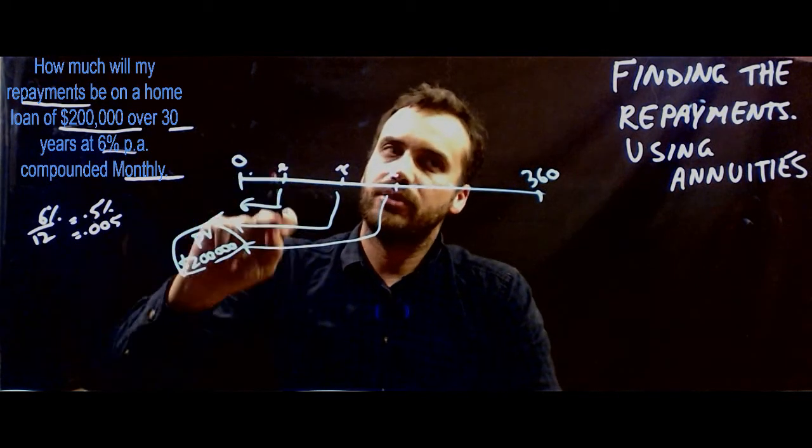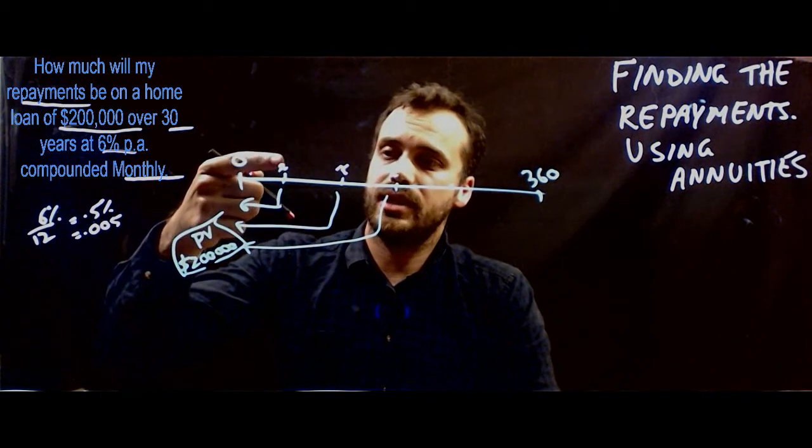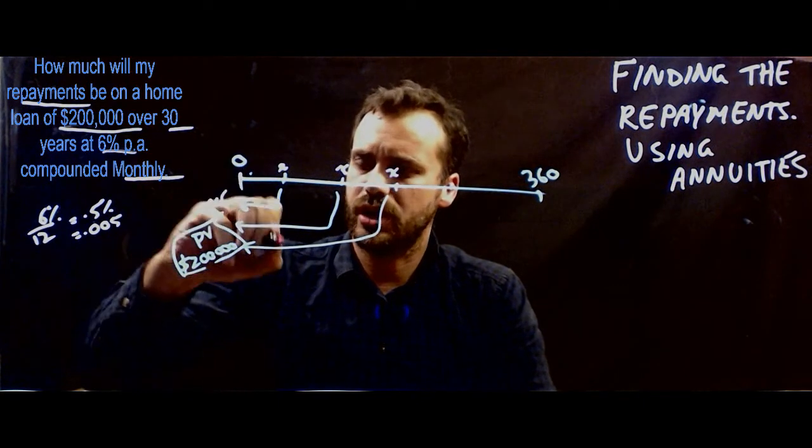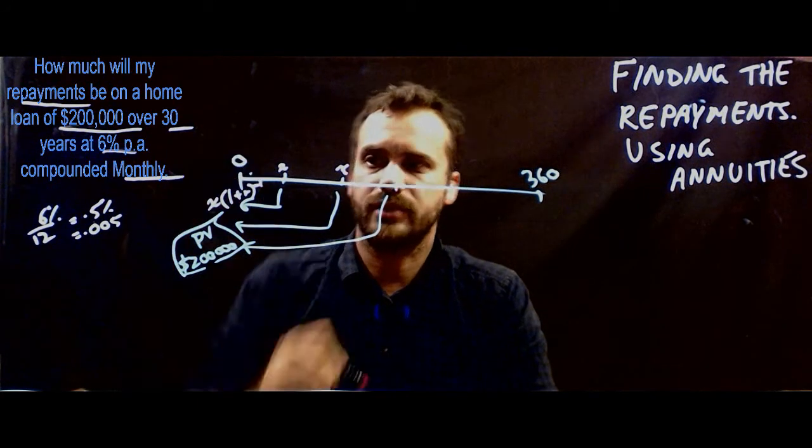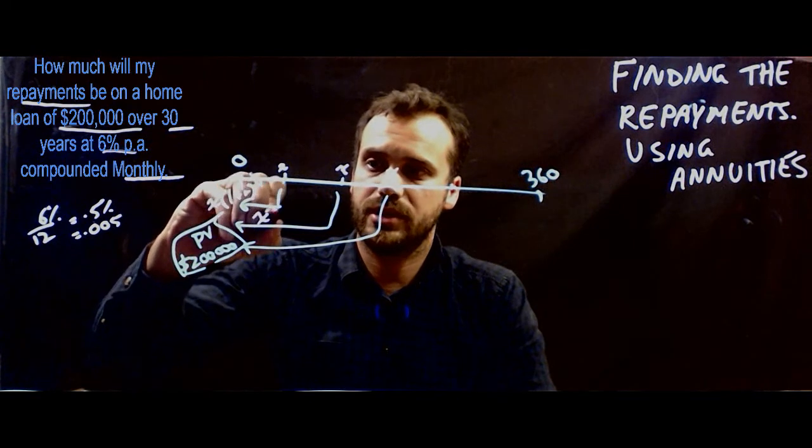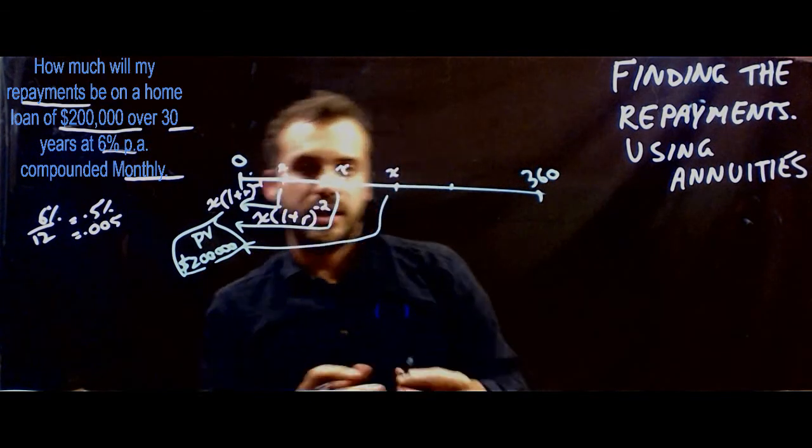And you'll remember from our previous work with present value stuff, that this X, when it comes back, it's going to be equal to X times 1 plus R to the negative 1. And similarly, this X is going to be equal to X times 1 plus R to the negative 2. Stuff you've done before.